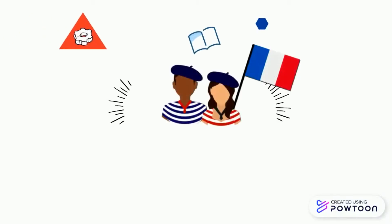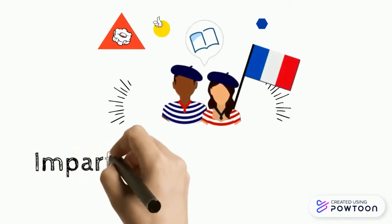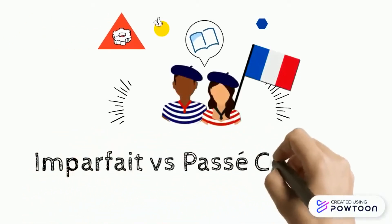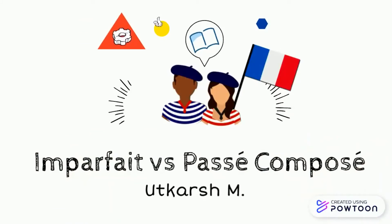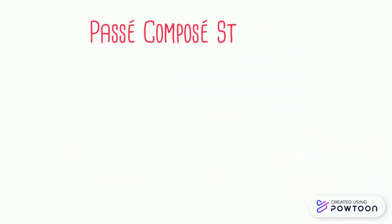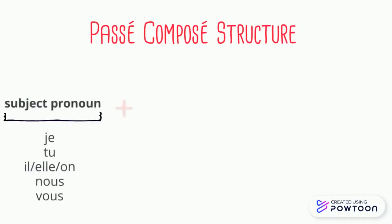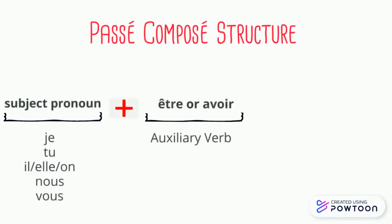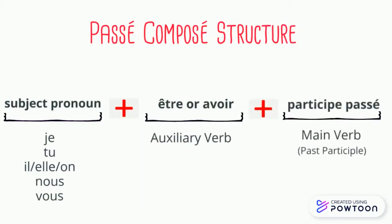Today I'm going to be teaching you the differences between two seemingly similar tenses in French: the imparfait and the passé composé. The passé composé consists of a subject pronoun followed by an auxiliary verb, which is either être or avoir. This is conjugated according to the subject pronoun, just like a regular verb, and is then followed by the participe passé of the main verb.